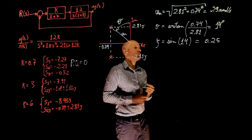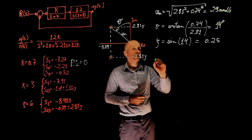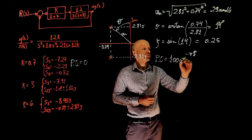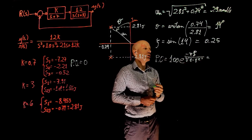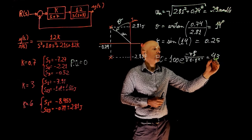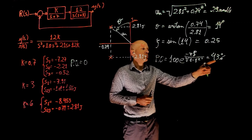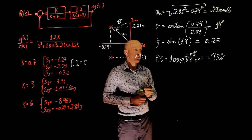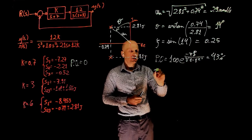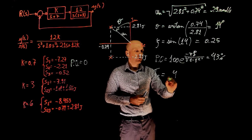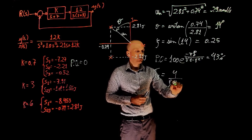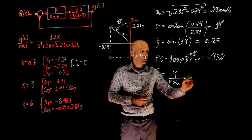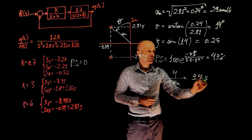With ζ and ωn, we can now determine the percent overshoot and settling time. For the percent overshoot, same formula again. And this time the percent overshoot is 43%. Notice the percent overshoot increased, the damping ratio decreased. The settling time is 4 over ζ ωn, and in this case that is 3.4 seconds.